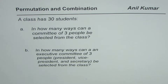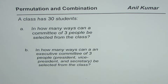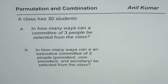I'm Anil Kumar. Here is another review question on permutation and combination. The question is: a class has 30 students. In how many ways can a committee of three people be selected from the class?